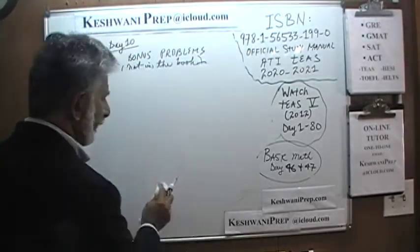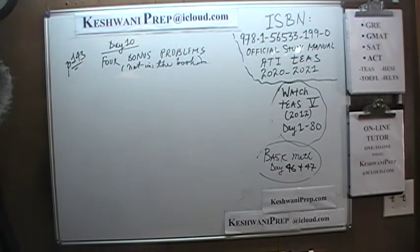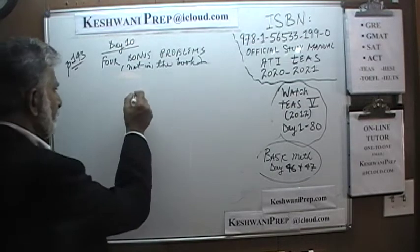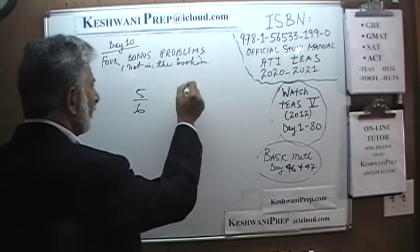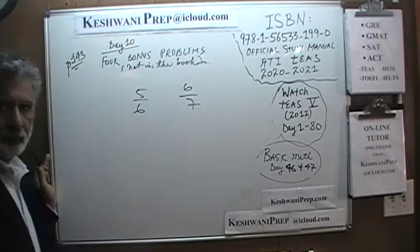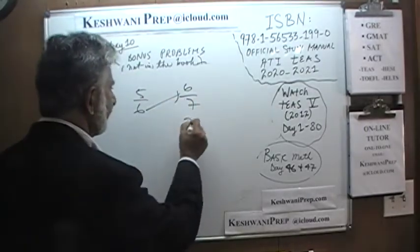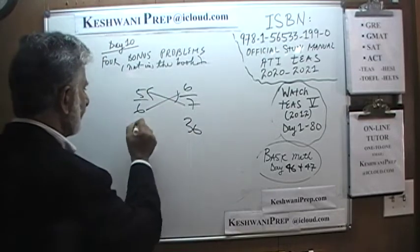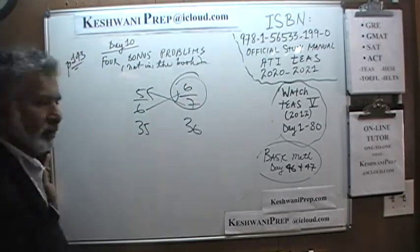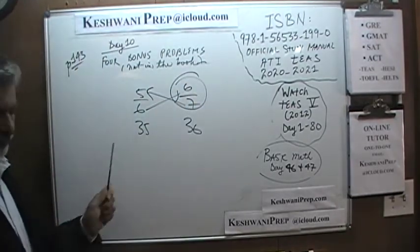We can go on comparing things all day long. For example: which one is bigger, five-sixths or six-sevenths? It's very easy. Six times six is thirty-six. Seven times five is thirty-five. And therefore six-sevenths is bigger, because it's thirty-six versus thirty-five.